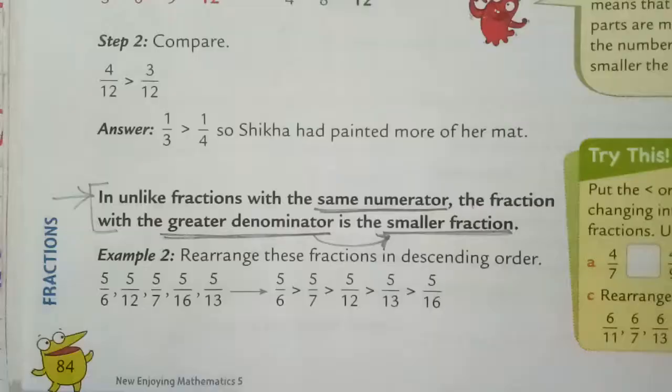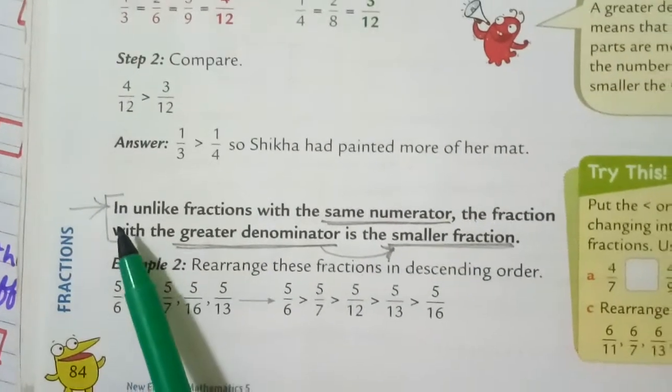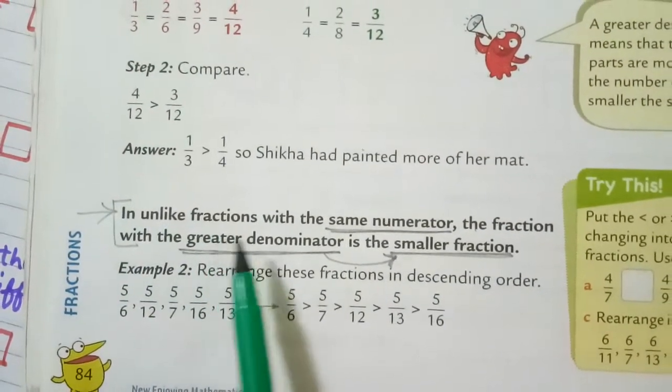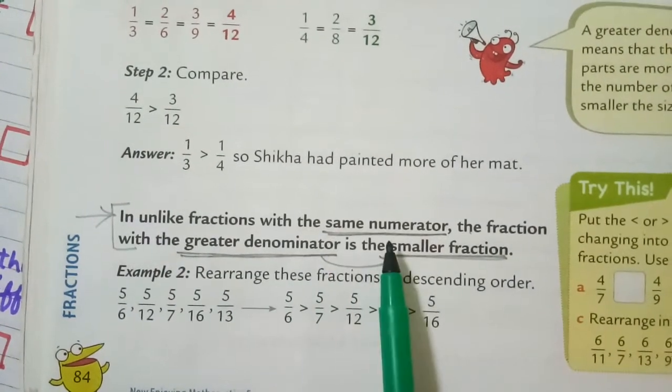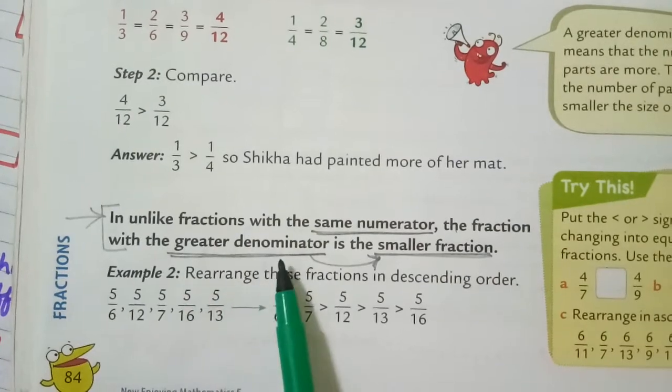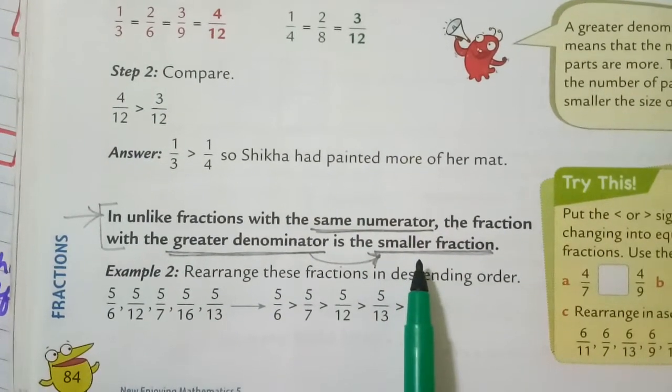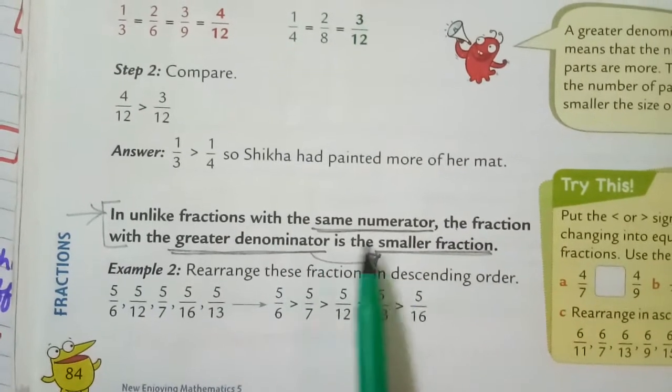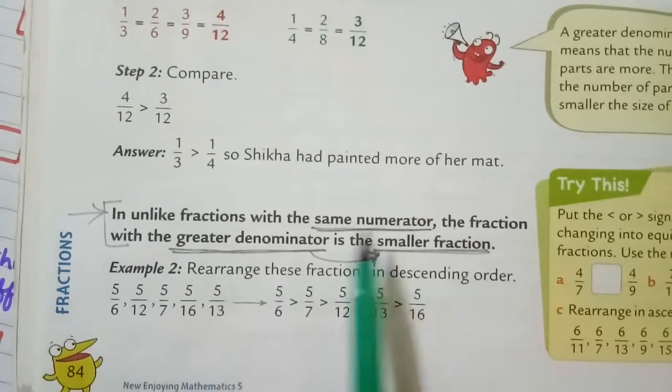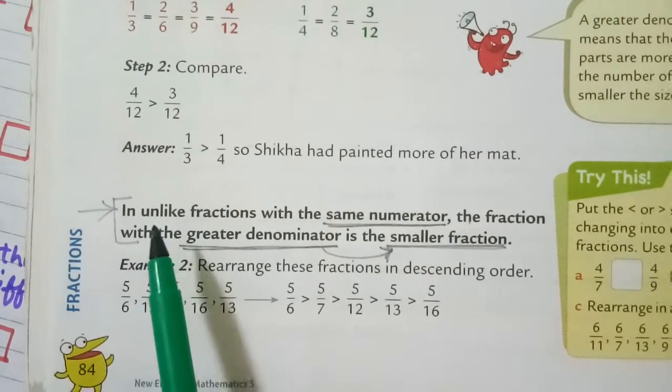So for this, it is given on page number 84 that in unlike fractions with the same numerator, the fraction with the greater denominator is the smaller fraction. That means if we have same numerators, it is written in unlike fractions, meaning the denominators are different.